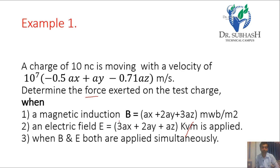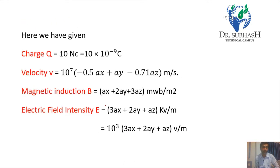We need to find the force due to both magnetic induction B and electric field E. The charge Q is 10 nanocoulombs, which is 10×10⁻⁹ coulombs. Velocity V is 10⁷ × (−0.5 Ax + Ay − 0.71 Az) m/s. Magnetic induction B is (Ax + 2Ay + 3Az) milliWeber/m². The electric field E is (3Ax + 2Ay + Az) kV/m, which equals 10³ × (3Ax + 2Ay + Az) V/m.